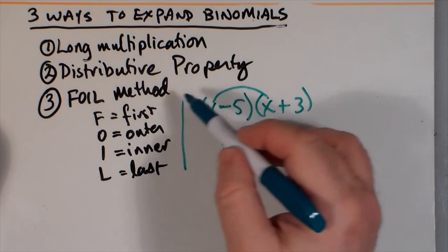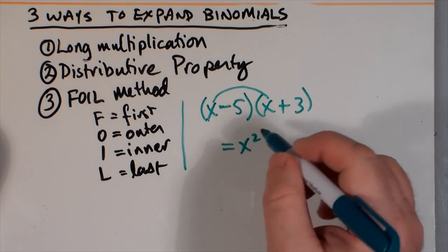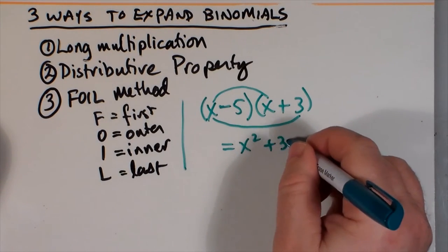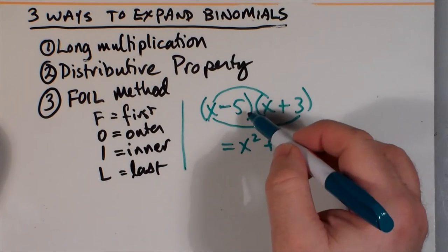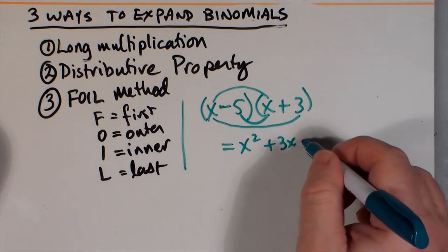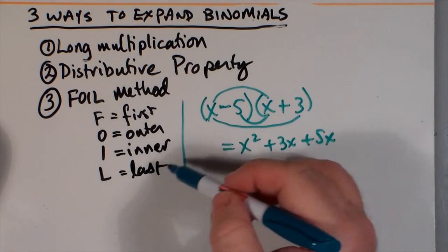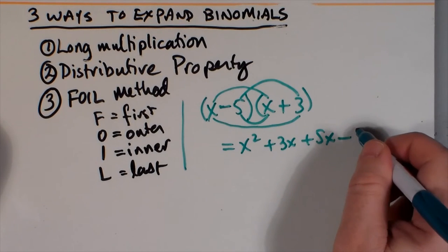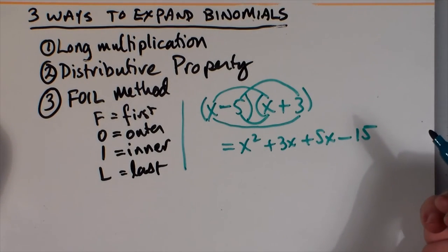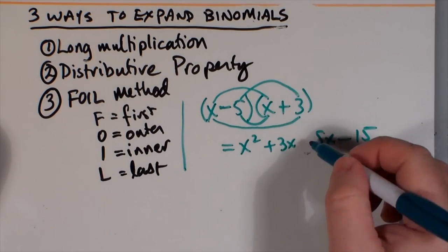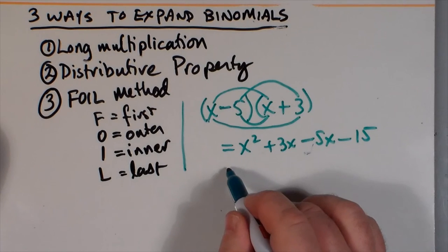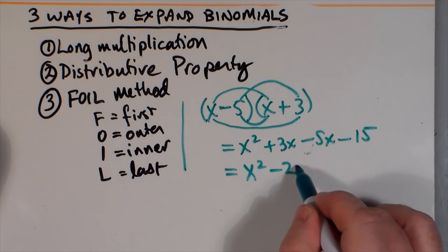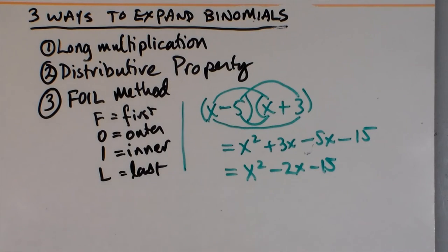x minus 5 times x plus 3. My First times First is x times x. Then x times positive 3 for the Outer, and for the Inner it's negative 5 times x, so that's minus 5x. And Last times Last: negative 5 times 3, which is negative 15. Now we gather our like terms — the x-squared is just x-squared, but with the 3x and the negative 5x we get negative 2x. And finally we copy down the minus 15. This is one more way of expanding binomials.